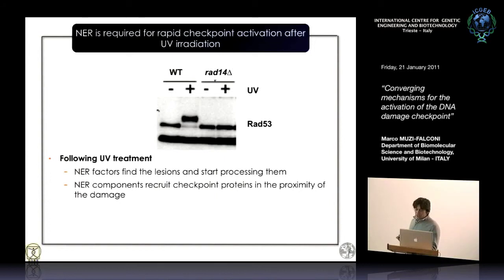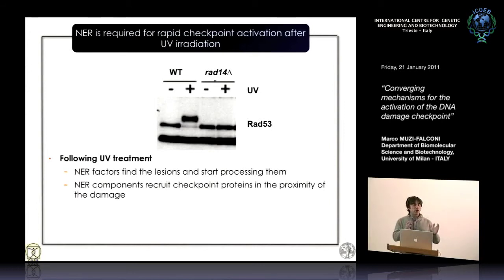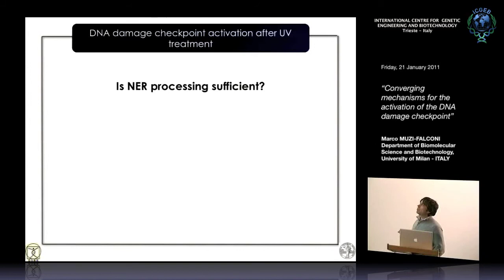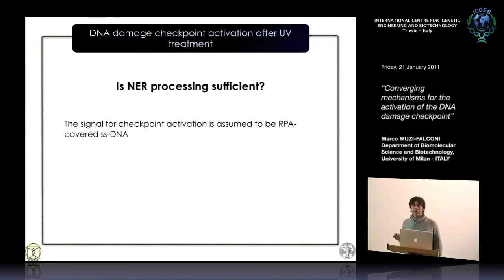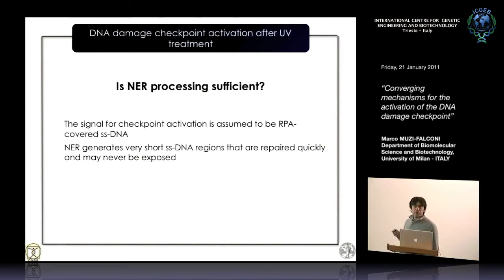We started wondering whether, because of the way nucleotide excision repair works — you make the incision, remove the oligo, generate a short 30-nucleotide gap, then rapidly refill — is NER processing sufficient to activate the checkpoint? The reason we wondered this is that, in the case of double-strand breaks, checkpoint proteins are recruited by single-stranded DNA. But there is essentially no single-stranded DNA in the case of UV lesions because the gap is very short and is refilled very rapidly. So how do checkpoint factors find any single-stranded DNA to bind?